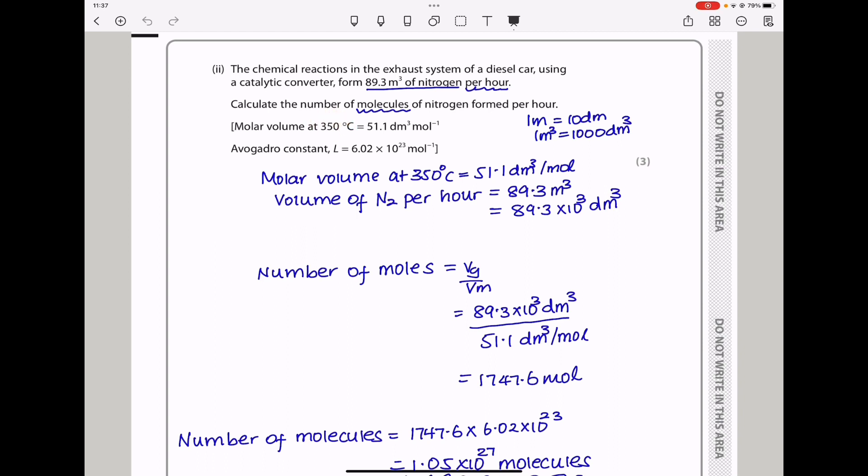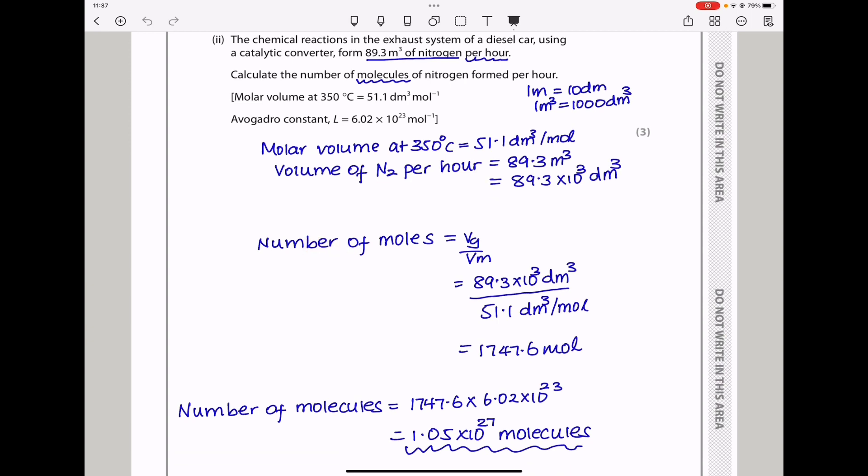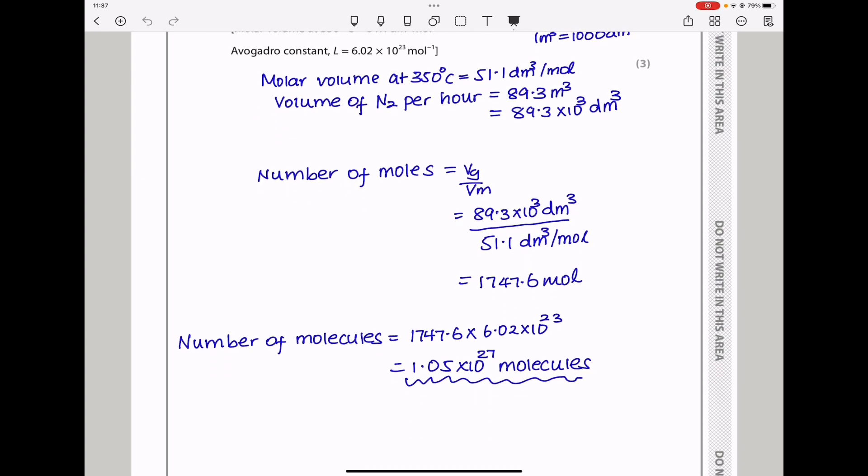Now I can use the molar gas volume, but at this temperature, we know the number of moles is going to be volume of gas divided by molar volume. But at this temperature, they've given us that. So the number of moles is going to be that volume of gas divided by the molar gas volume, which is 51.1 decimeter cubed per mole. My answer was 1747.6 moles. And finally, to find the number of molecules, it's going to be the number of moles times Avogadro's number, which gave me 1.05 times 10 power 27 molecules.